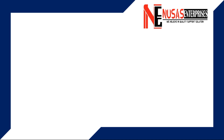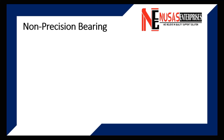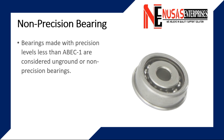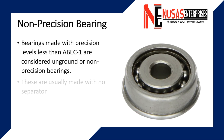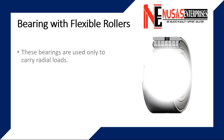Some special purpose bearings are specially designed for a particular job, unlike the common types explained in this video. Non-precision bearings are made with precision levels less than ABIC-1 and are considered unground or non-precision bearings. These are usually made with no separator and sometimes having split or stamped sheet metal races. Non-precision bearings include a broad range of styles used in applications from lawn and garden wheels, trailer jacks, hoists, trolley wheels, and agricultural equipment.